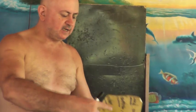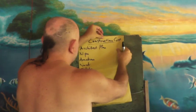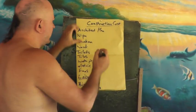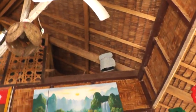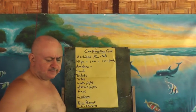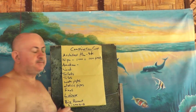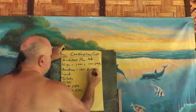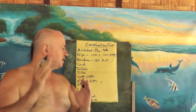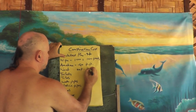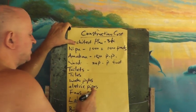For construction costs: an architect plan is about 3,000 pesos. Nipah for the roof is around 1,000 pesos per 100 pads. Amakan is about 150 pesos per pad — roughly one meter by two or three meters. Wood is about 20 pesos per foot. You'll also need to buy toilets, tiles — broken tiles are about 50 pesos per piece — water pipes, and electric pipes.